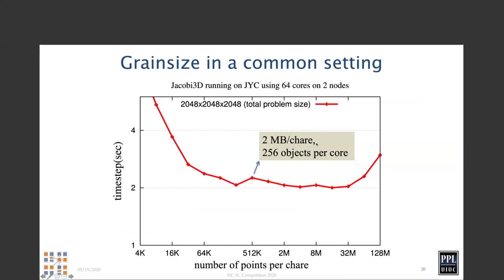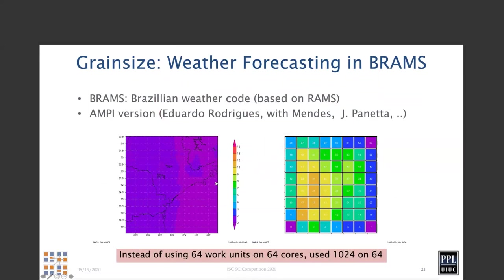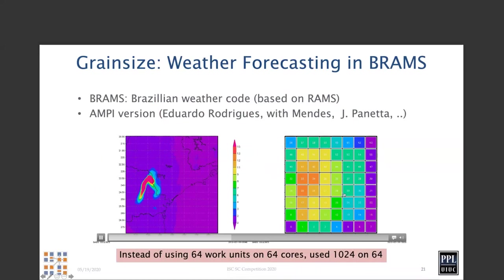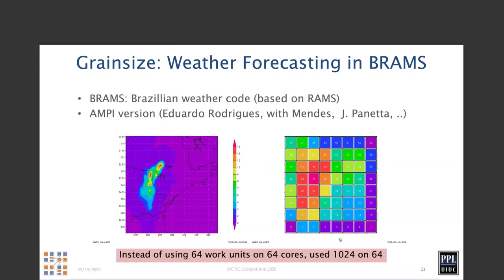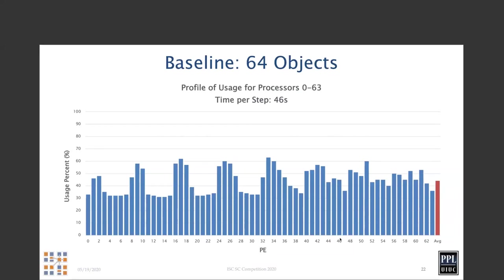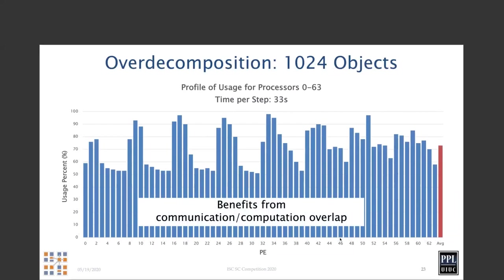As an example, a very simple stencil calculation done some years ago achieved minima across a broad region. Here is another example: a code called BRAMS, which is a Brazilian version of the RAMS weather forecasting code. As a storm passes by the Brazilian coastline, the load on different processors shifts if you're running without object-based virtualization. If instead we use 1,000 objects on 64 processors, with 64 processors on the x-axis, the load is uneven without virtualization.